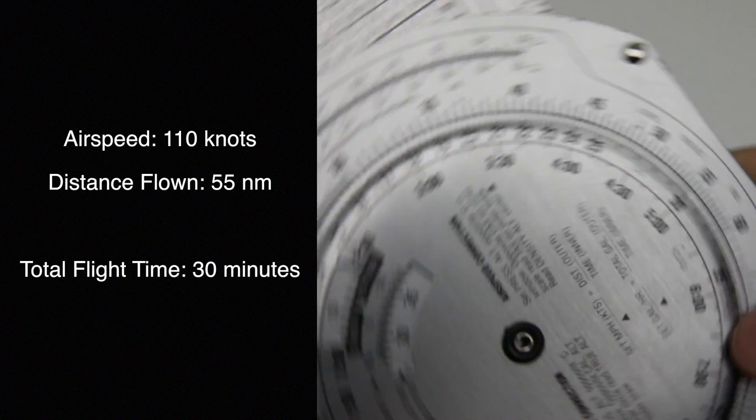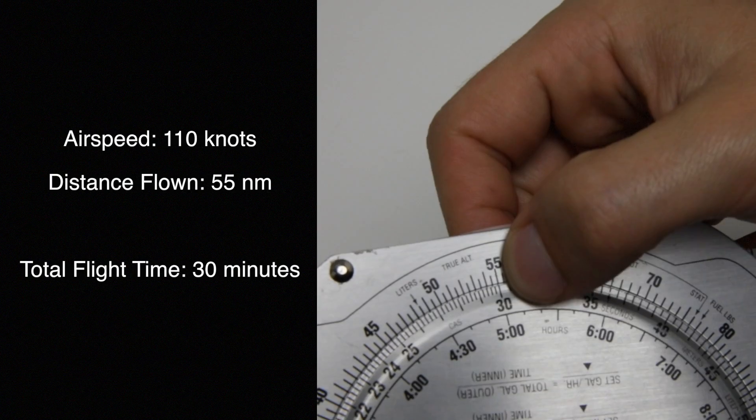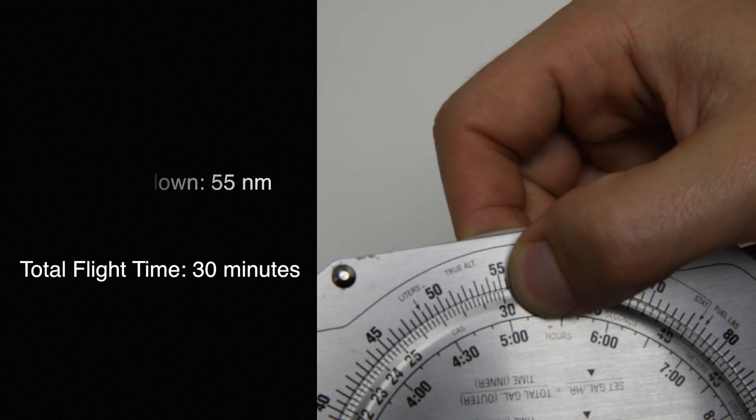So we go on the outer scale to 55 miles and we read right under the time, and it's going to be 30 minutes. Pretty simple.